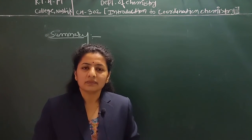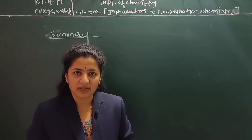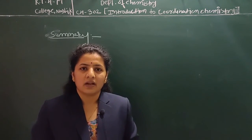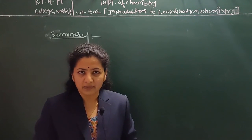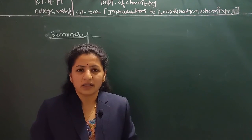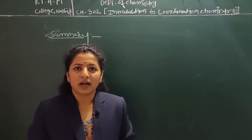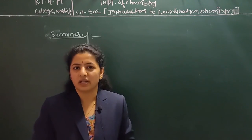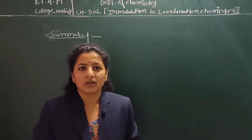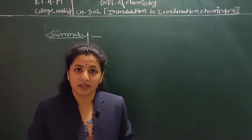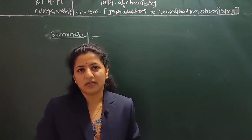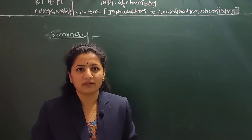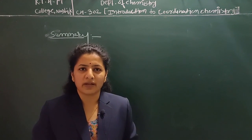We also discussed Werner's theory — primary valency and secondary valency, differences between them, how to calculate the oxidation state of the central metal atom, the effective atomic number (EAN) rule, and IUPAC nomenclature of coordination compounds. Finally, we covered applications of coordination compounds in various fields. In the next lecture, we will start with the new topic: molecular orbital theory of covalent bonding. Thank you.